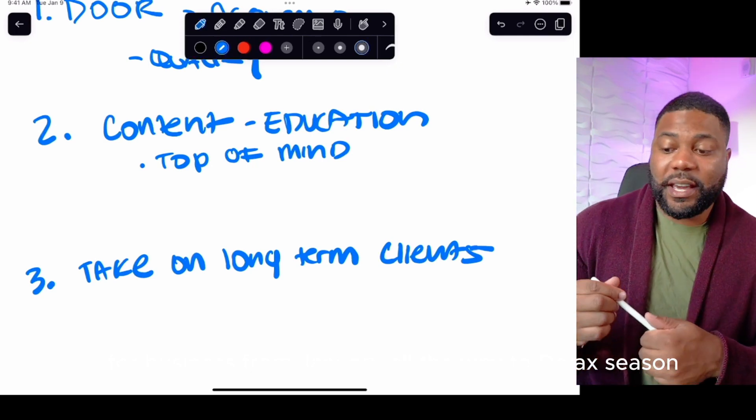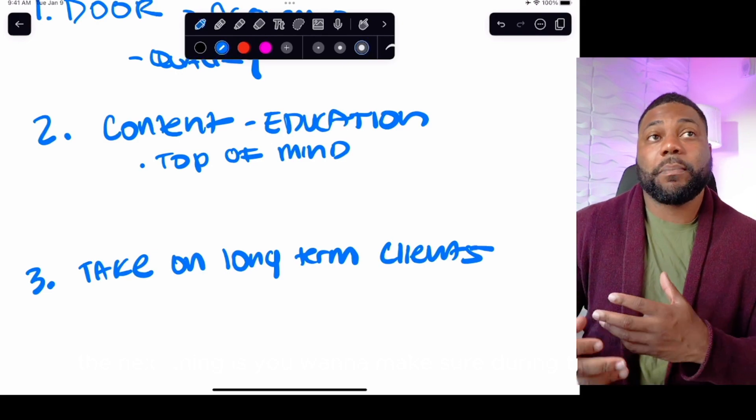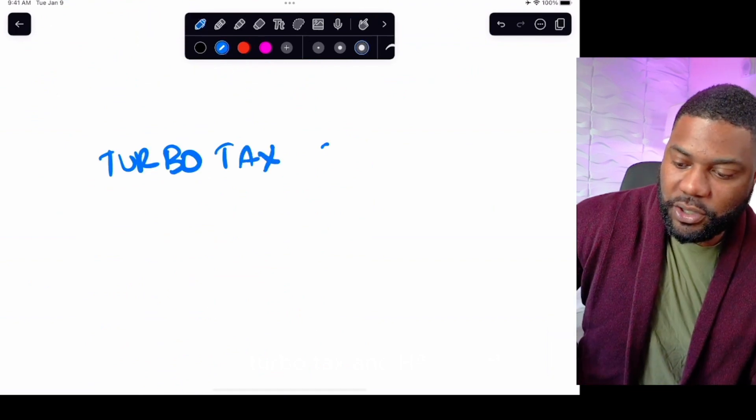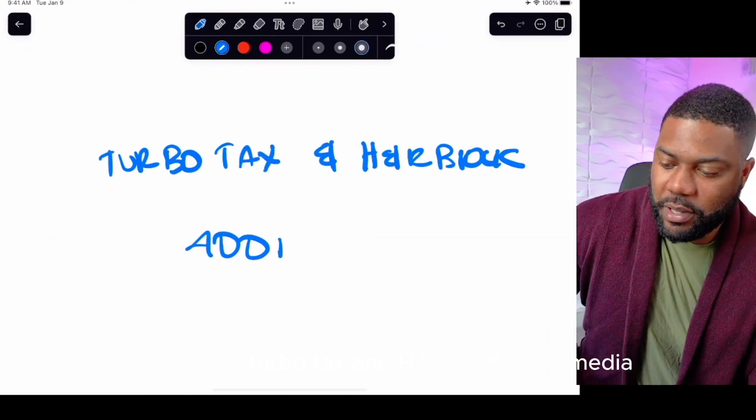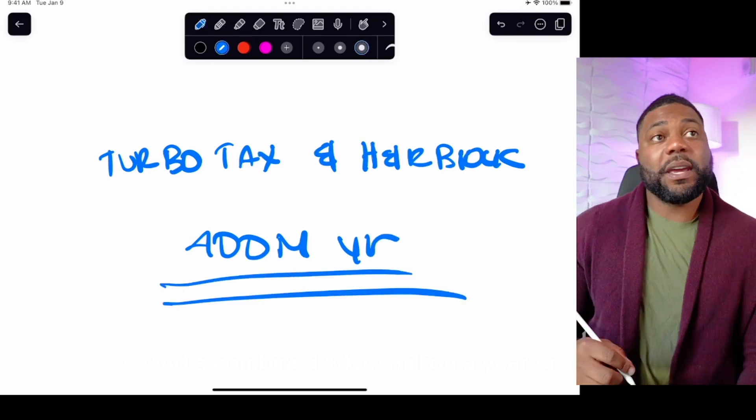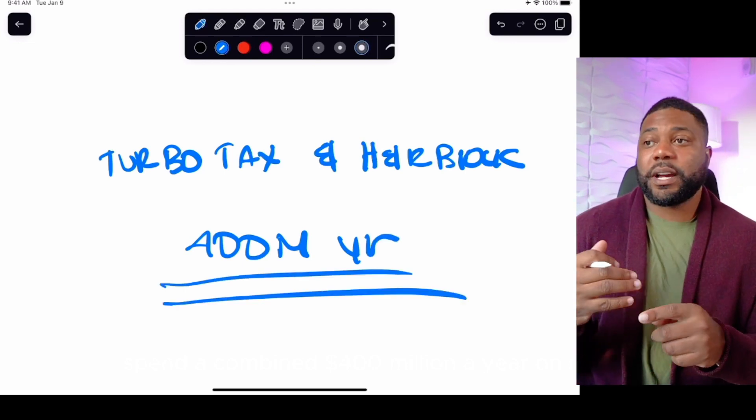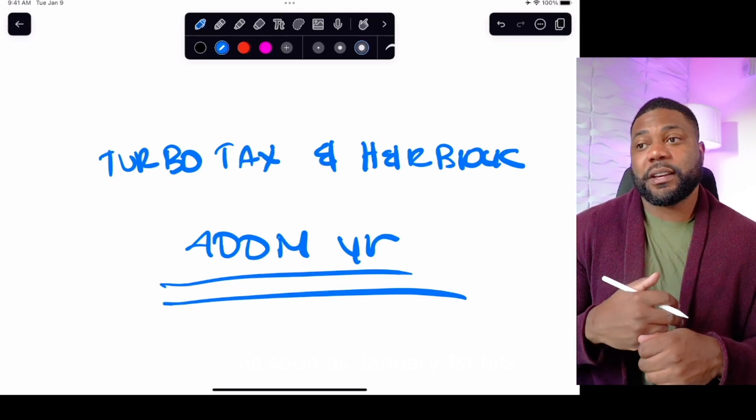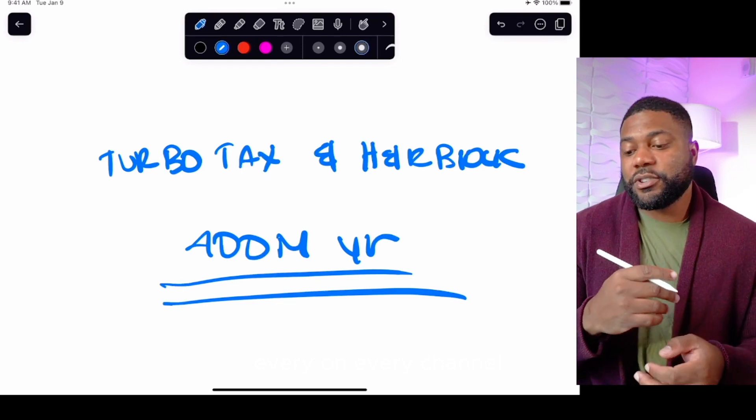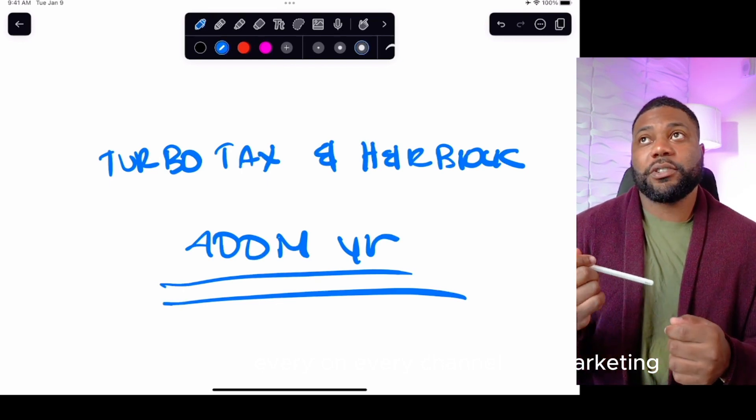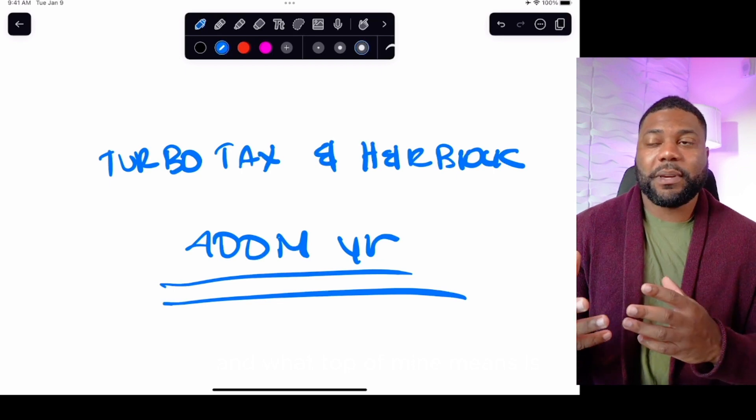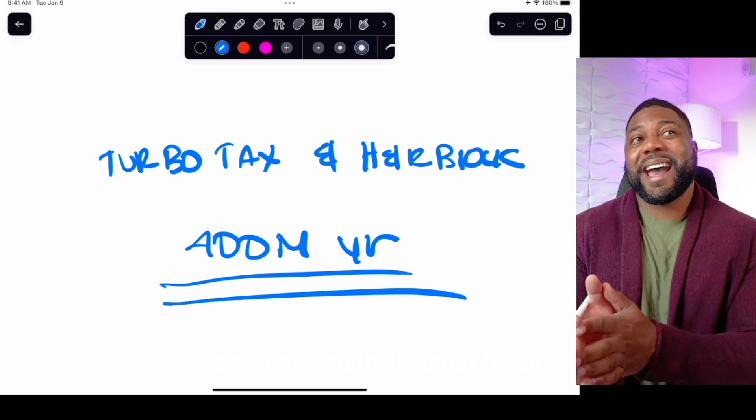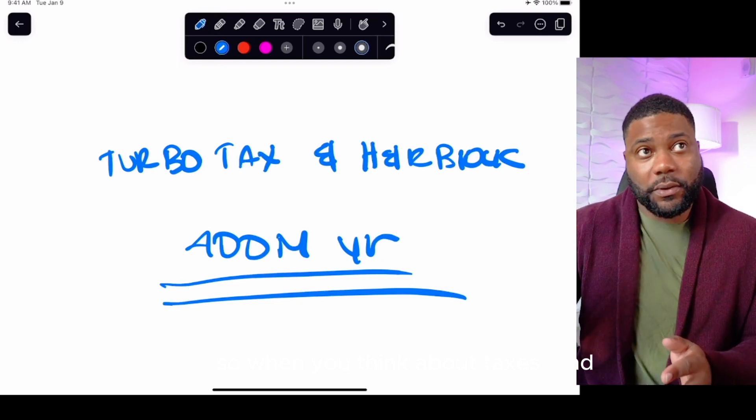The next thing is you want to make sure during tax season when you're thinking about marketing, you're top of mind. TurboTax and H&R Block spend a combined $400 million a year on media. That's Super Bowl commercials, that's the commercials that you see as soon as January 1st hits, you're seeing all their commercials on every channel. The reason that you're seeing that is because they're trying to do top of mind marketing. And what top of mind means is you want to see something consistently so many times, so when you think about taxes, you think about them.